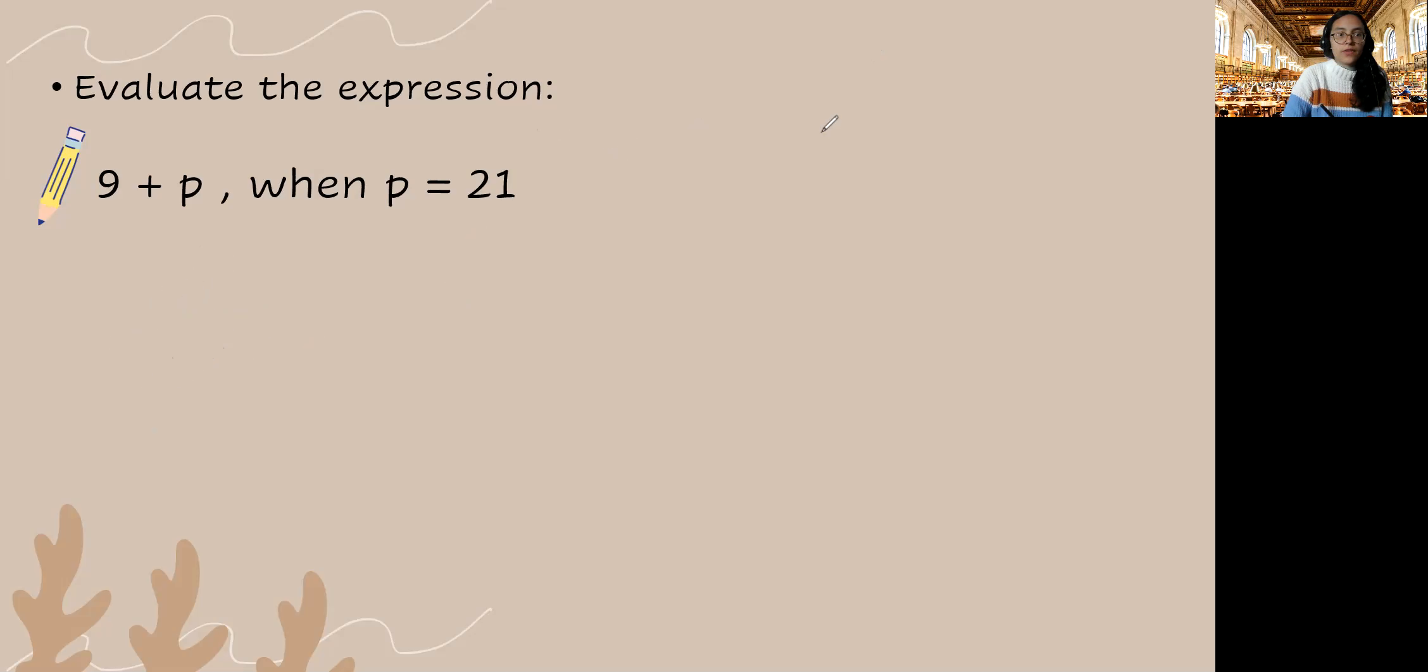Let's go ahead and move on to the next problem. In this expression we have 4 times n when n is equal to 5 and we are asked to evaluate. So again we're going to substitute 5 for n. We're going to carry out our operation which is multiplication, 4 times 5 is 20.